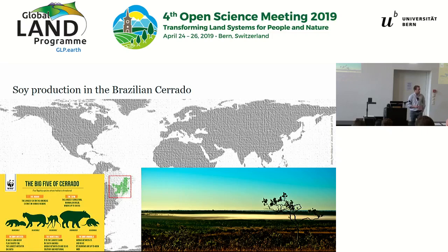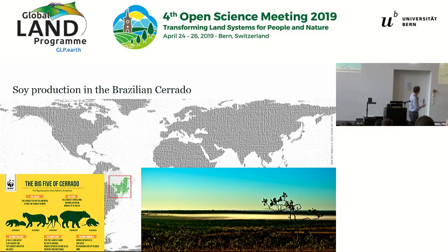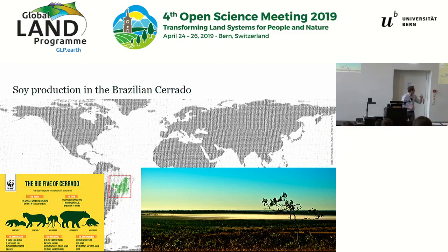Much of the campaigning effort is focused around the big five of the Cerrado: from left, the giant anteater, the jaguar, the maned wolf, the South American tapir, and the giant armadillo.